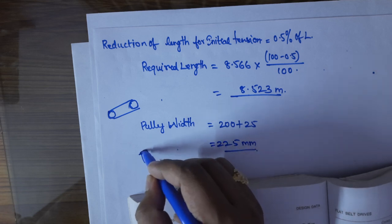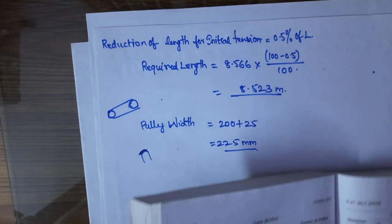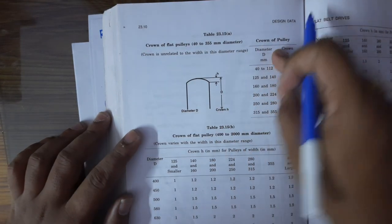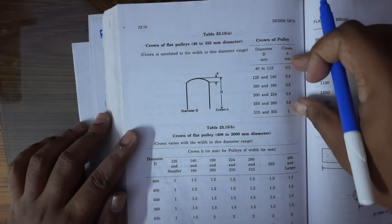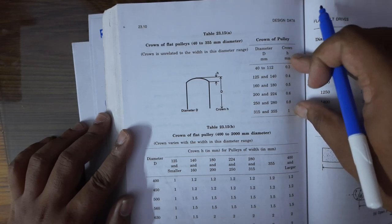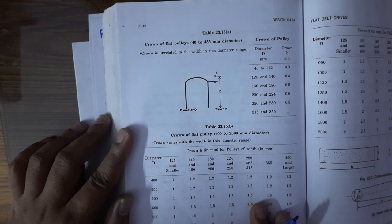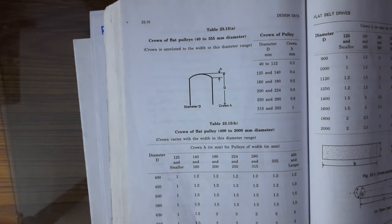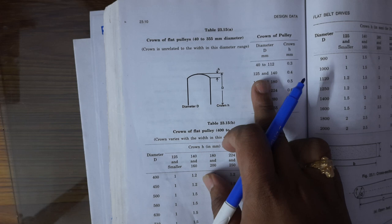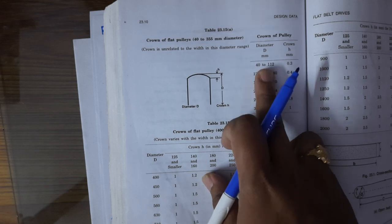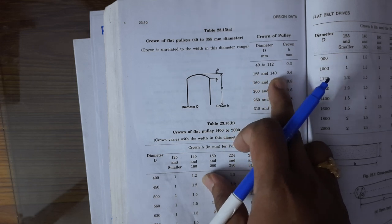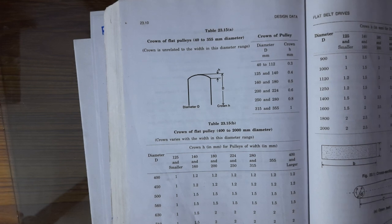The crown height h is determined based on the pulley diameter. For the larger pulley D = 1200 mm, the corresponding crown height values are selected from the table — with D values between 112 and 140 mm range, the crown h = 0.4 or 0.3 mm accordingly.